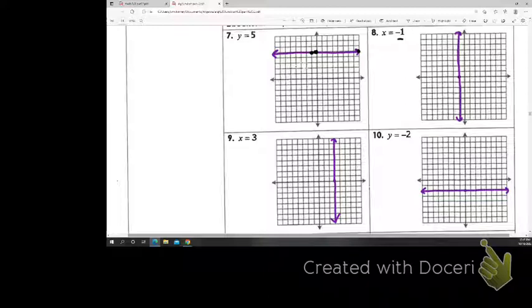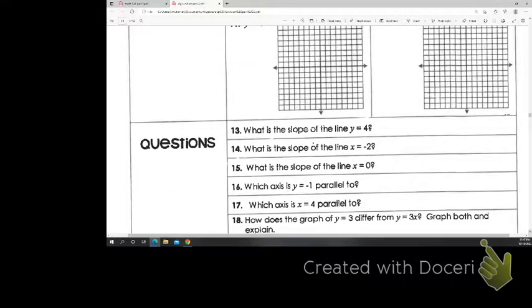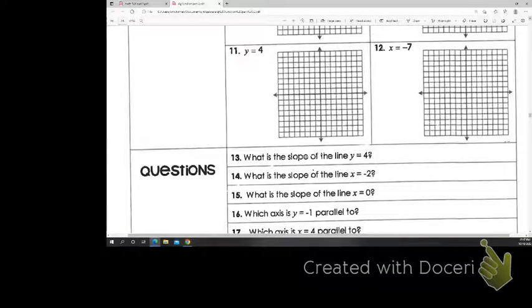So no surprises with 11 and 12. 11, we should have a horizontal line. If you have trouble remembering the difference in those two words, think about the horizon. Like looking out at a sunset along the horizon. So that's horizontal. And vertical, like a basketball player maybe measures their vertical jump, how high off the ground they can get. Like straight up vertical. So counting up 4 is my hardest part. 1, 2, 3, 4. Straight across. I turn my pencil off. 1, 2, 3, 4.